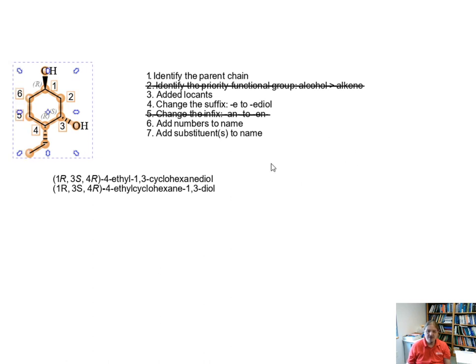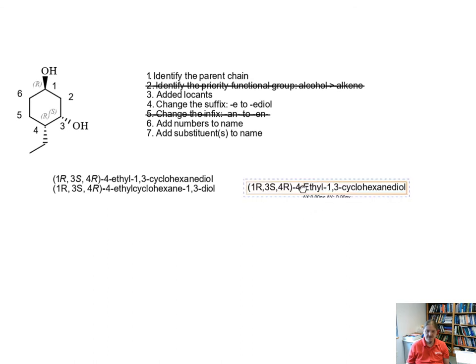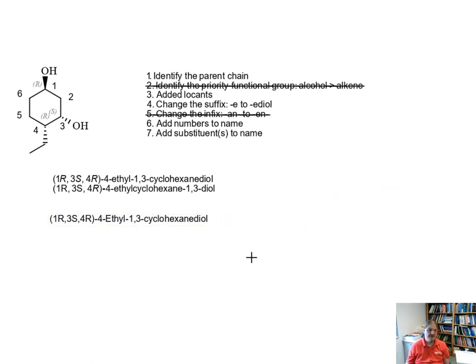So my software that I'm using here could generate an IUPAC name for this structure. And there it is (1R,3S,4R)-4-ethyl-1,3-cyclohexanediol, the same thing we got. And it's always good to be able to check yourself if you can. Thank you for watching.